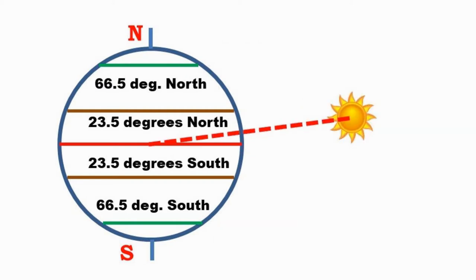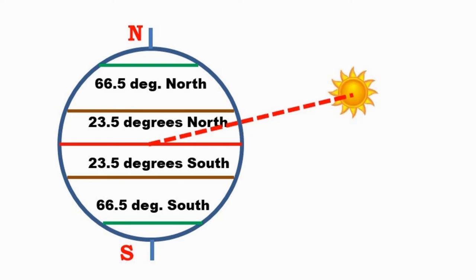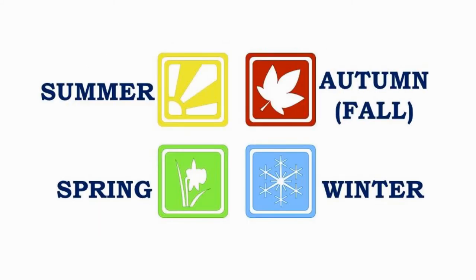As the days go by, the declination of the Sun increases and the Sun moves up towards the Tropic of Cancer until we reach the June solstice. Notice the cyclic sequence of the four seasons: summer, autumn, winter, and spring.